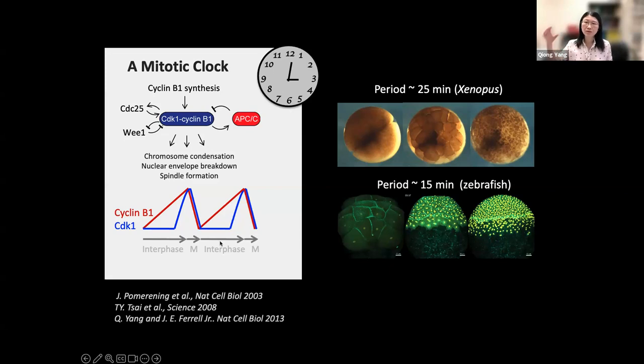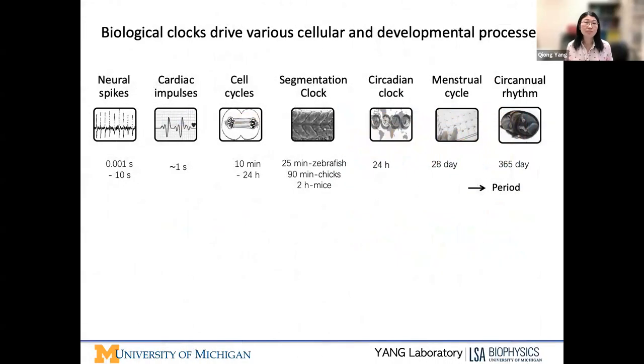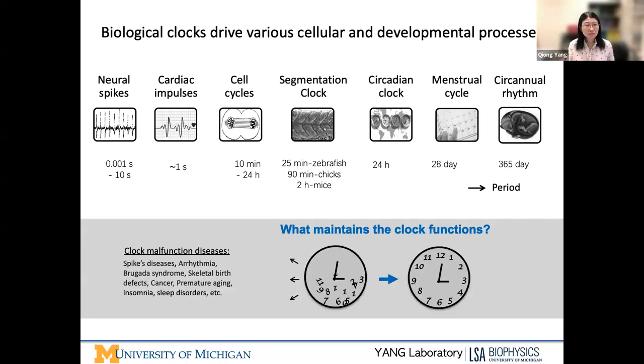There are other regulators such as CDC25 and Wee1 which play a role to form this important double negative and double positive feedback loop, so that CDK1 not simply follows cyclin B as mass action kinetics, but switches from off to on in a very bistable switch manner. The cell cycle circuit is just one of the many biological oscillators that play a very important role to control timing processes in cells and development. It can link to many diseases if you interrupt the clock function.